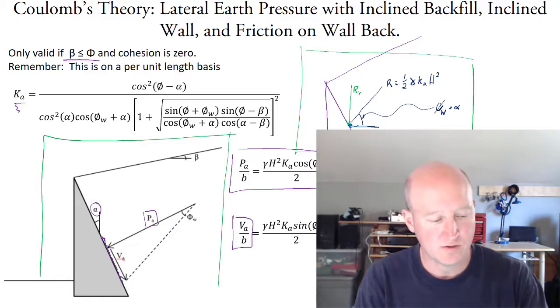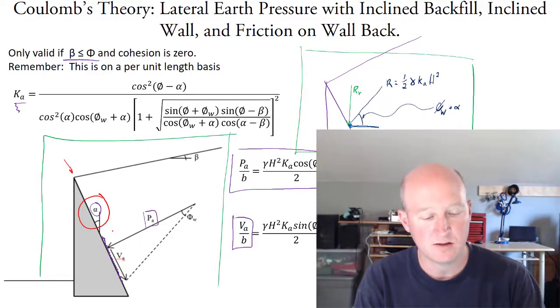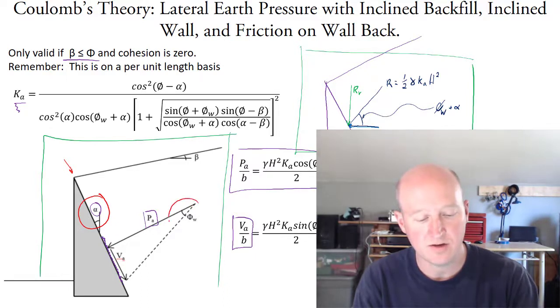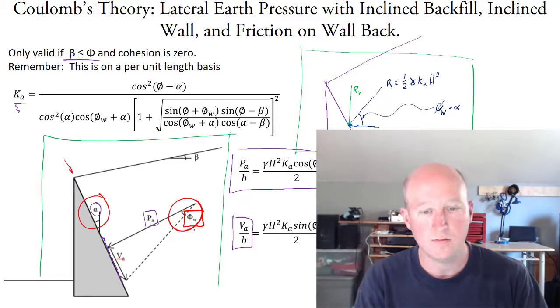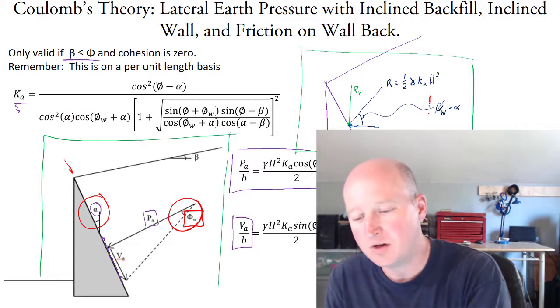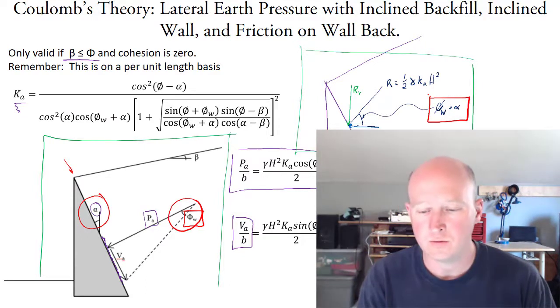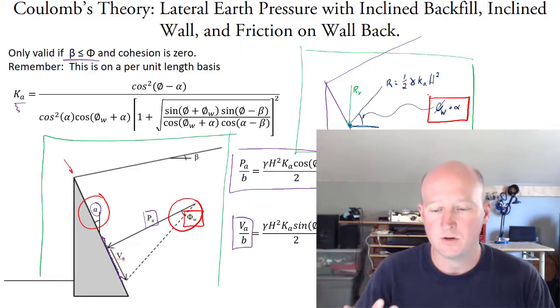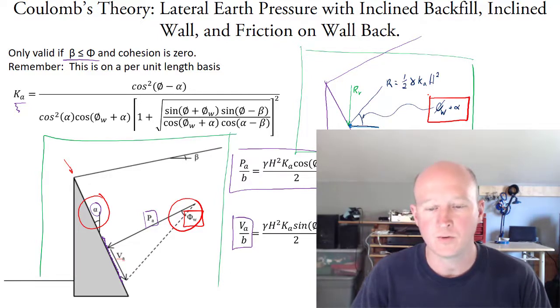I showed you this figure here and it's a little bit confusing because we've got this angle here. The way that Coulomb works is it says that the resultant is inclined along the back face by phi wall, and so what the true inclination of the resultant ends up being is the combination of those two angles. So it's probably a good thing to go ahead and work an example that is a little bit more explicit with an inclined back of the wall.